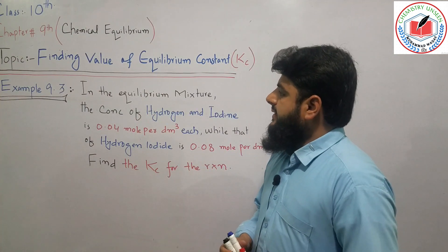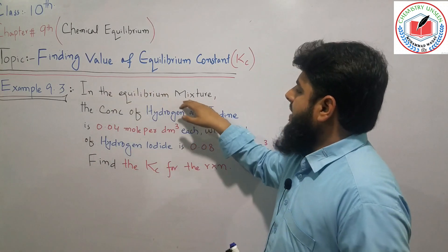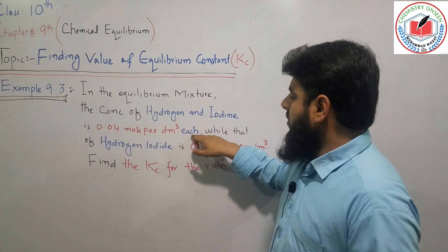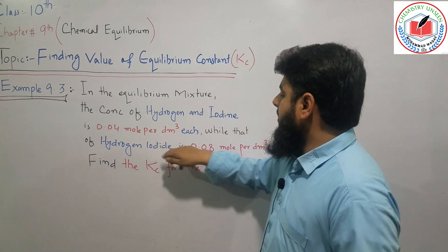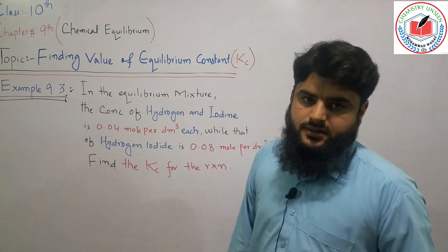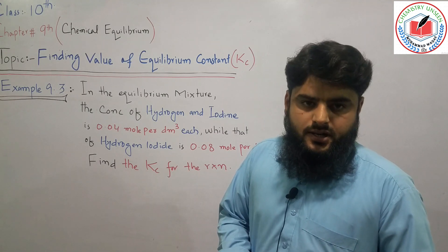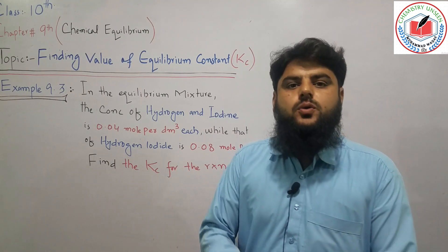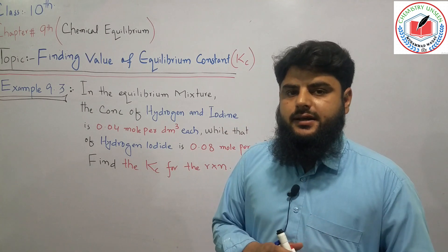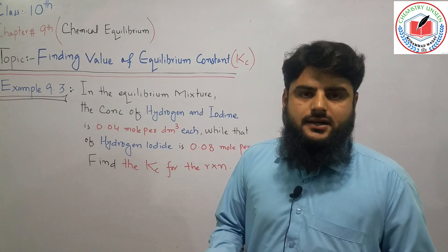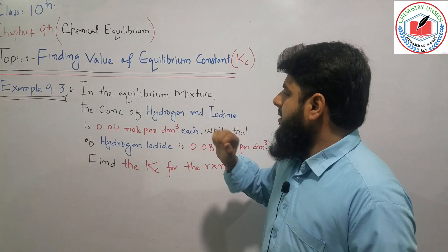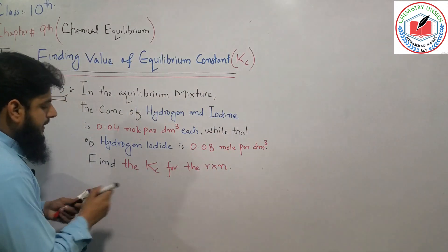In our example from the textbook, in the equilibrium mixture, the concentration of hydrogen and iodine is 0.4 mol/dm³ each, while hydrogen iodide is 0.8 mol/dm³. Find the Kc value for the reaction. The chemical reaction involves hydrogen iodide at 0.8 mol/dm³, which is the concentration of hydrogen iodide.